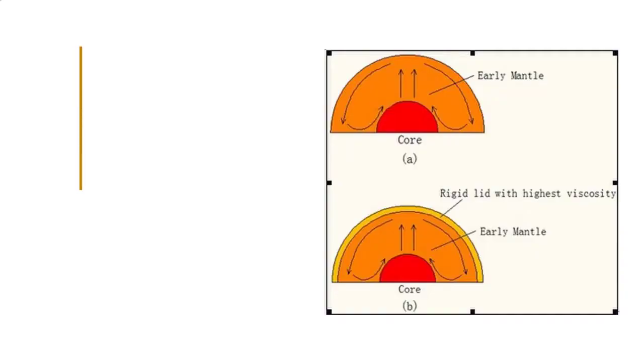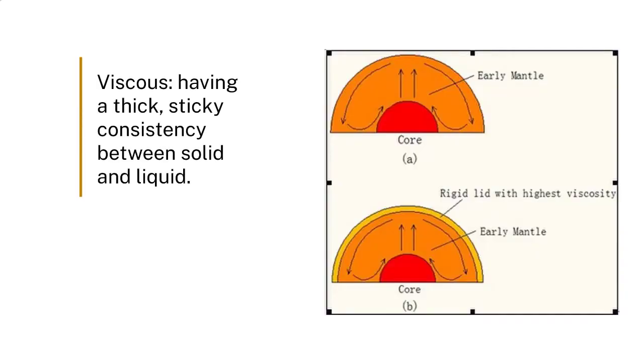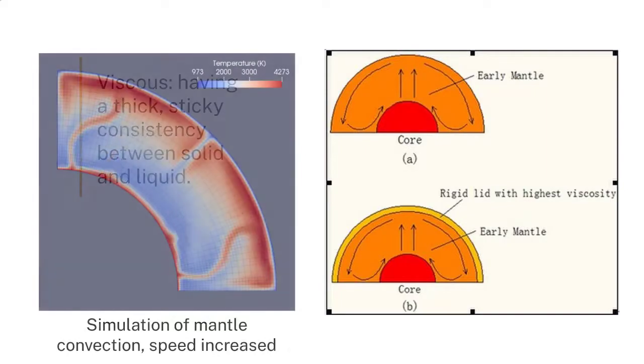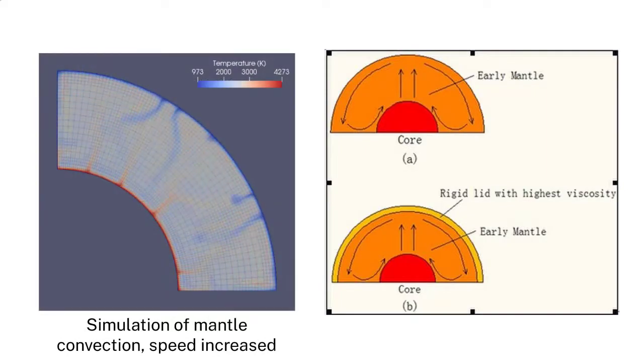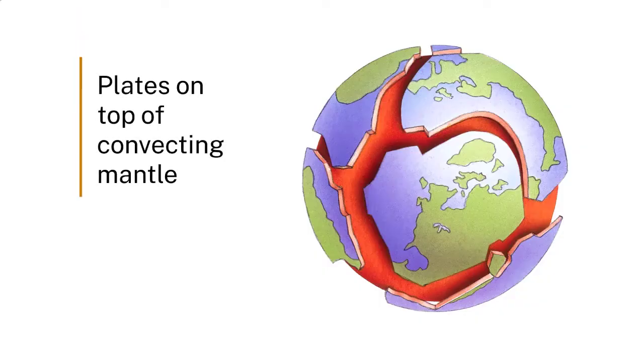We're talking about plate tectonics — the all-encompassing model that explains most of surficial processes on Earth. In this model we have a viscous flowing mantle, which is convecting, and on top of that we have crustal material which is moving around.